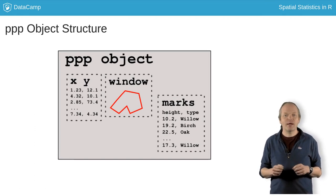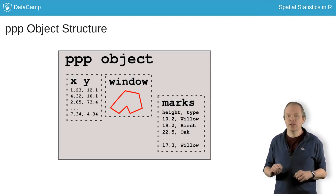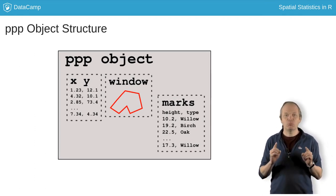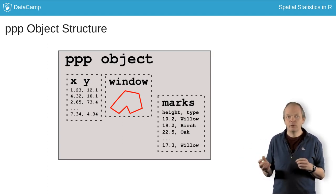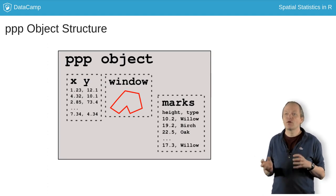Spatstat stores spatial point patterns in its PPP objects, which stands for planar point pattern. These contain the event coordinates, the window, and if it's a marked point process, the marks.